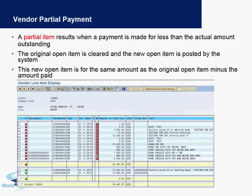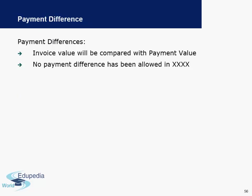A partial payment is done when a payment is made for less than the actual amount outstanding. For example, if there is an invoice of $100 for the vendor which is due, but you only intend to pay $80, that will be a partial item. The original open item is cleared and a new open item is posted by the system for the remaining amount. The invoice value will be compared with the payment value in every case, and if there are payment differences, these are either separately posted to a GL account if they are under a tolerance limit, or you will get an error if there is a large payment difference.